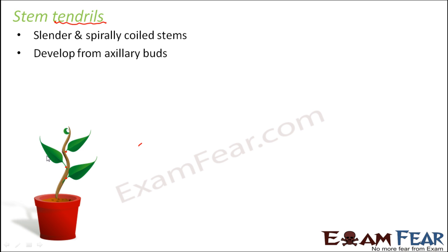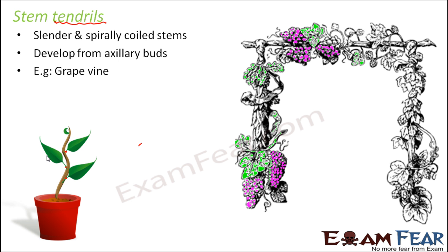When this stem tendril comes in contact with some neighboring object, it coils around it and starts climbing. Examples of stem tendrils include the grapevine. You would have seen grapevines growing like this — there is some support, some pillar-like structure, and the vine starts wrapping around it. These are examples of stem tendrils and this type of plant is basically a climber.